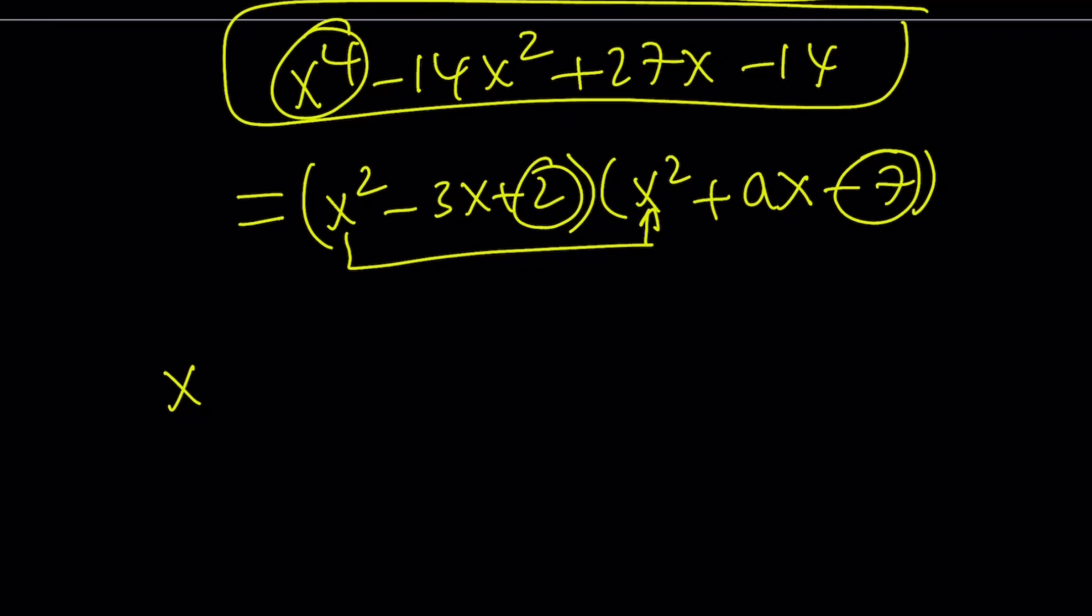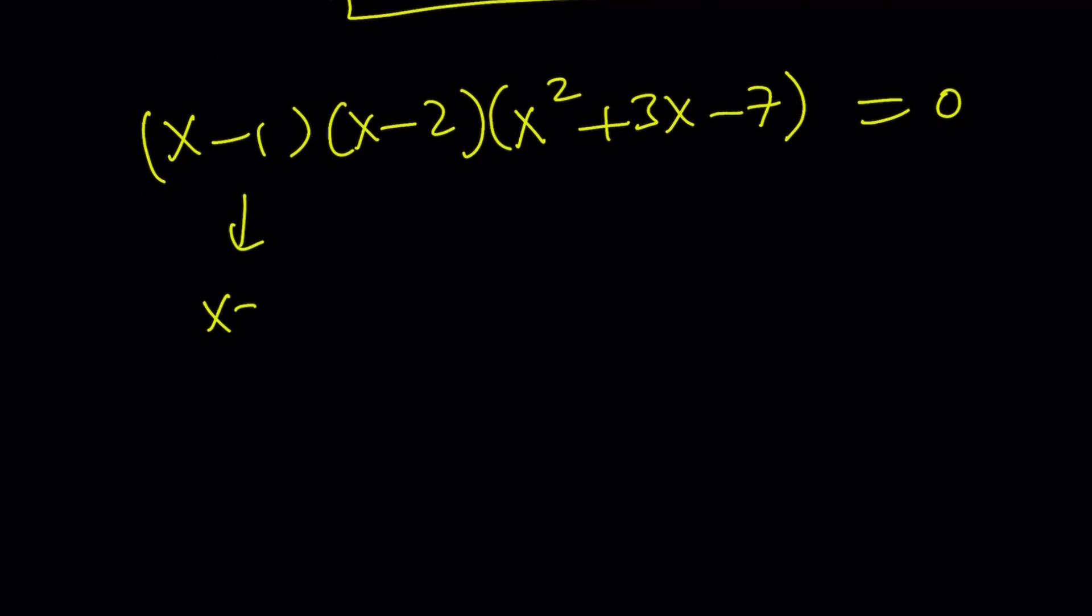Our quartic is going to be factored as x minus 1, x minus 2, and the other factor is going to be x squared plus 3x minus 7. Set it equal to 0. You got all the solutions. We already know x equals 1 and x equals 2 are solutions. But the other two are going to come from the quadratic.